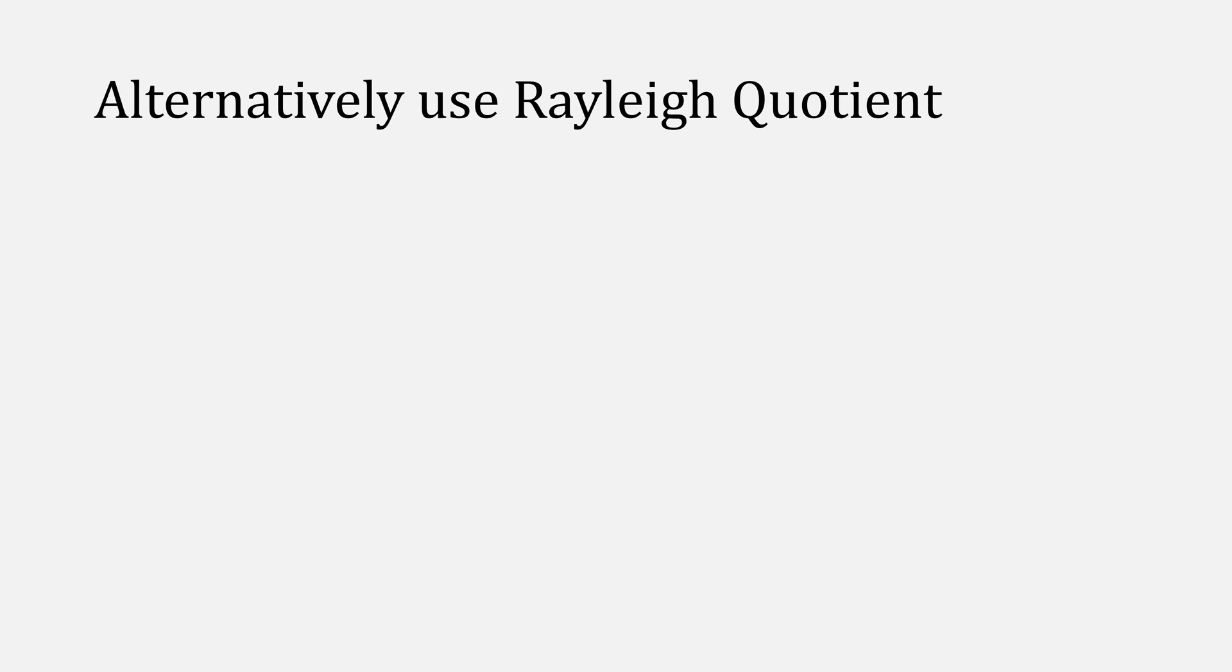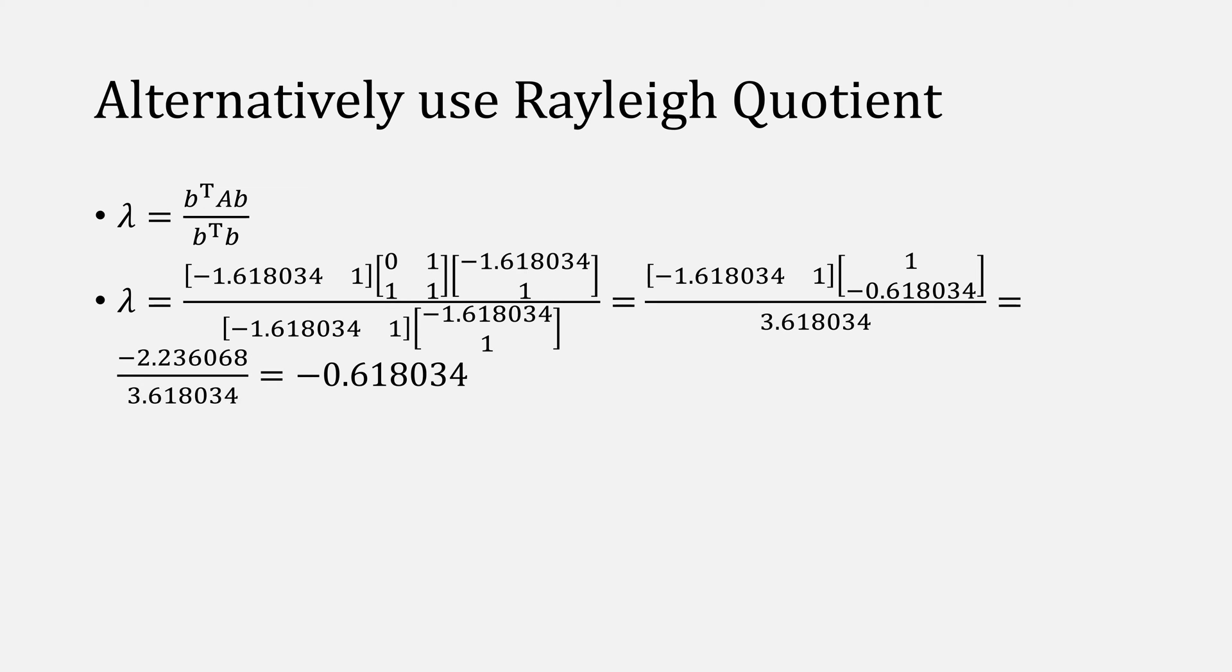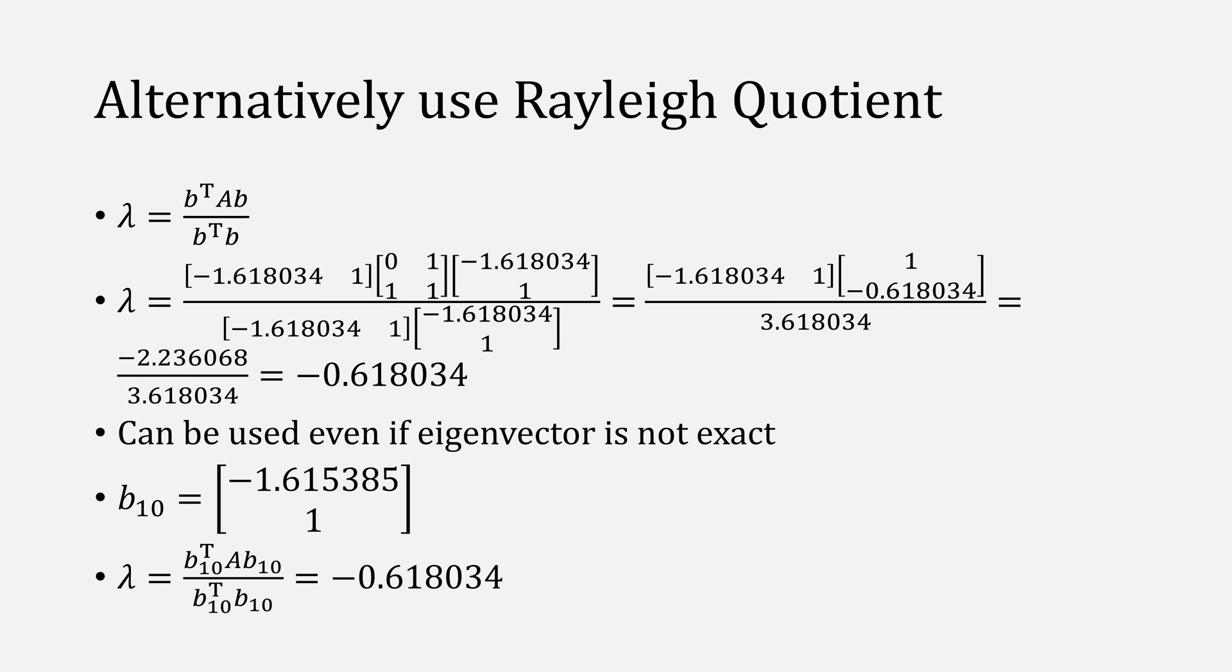Another way you could find the eigenvalue given an eigenvector is to use the Rayleigh quotient, which is this function here. Why it works is a bit beyond the scope of this video, but as an example, let's plug in the eigenvector that we found earlier, and indeed this does give us our eigenvalue of negative 0.618. In fact, you can actually use this quotient even if your eigenvector is not exact. Let's take one of our earlier values for b, and if you plug this into our quotient, we still get the same eigenvalue.